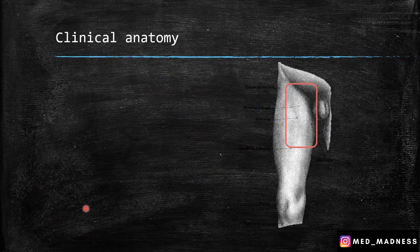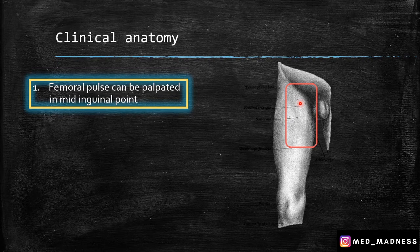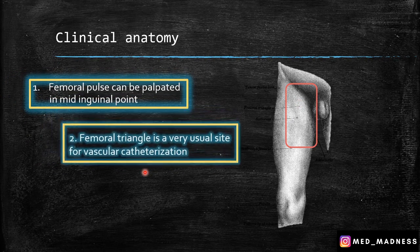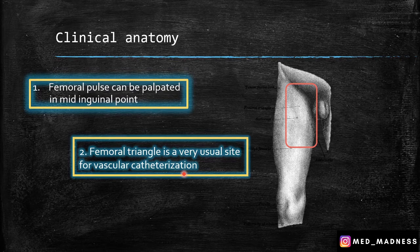Now the clinical anatomy of the femoral triangle. Number one: the femoral pulse can be palpated at the mid-inguinal point — you can even draw blood from it. Number two: the femoral triangle is a very usual site for vascular catheterization. It's a very common point for vascular access — you can reach the right heart or the left heart, or arteries like cerebral arteries or coronary arteries. There are lots of procedures involving this site.